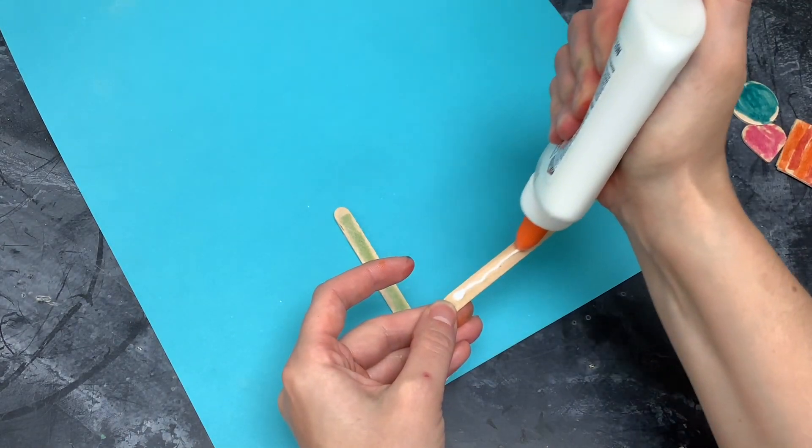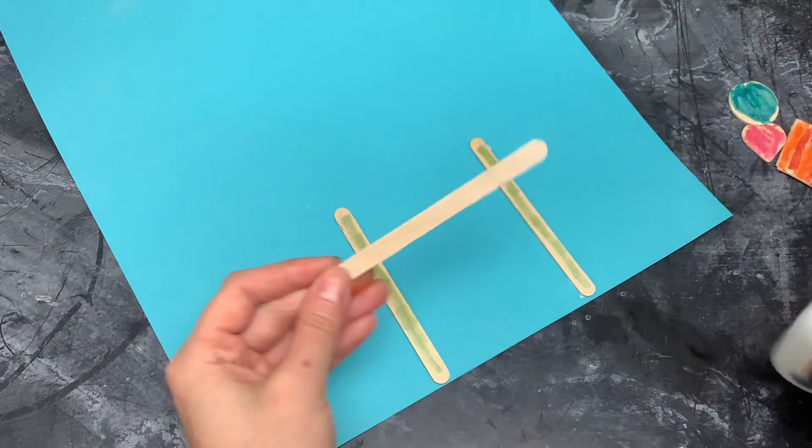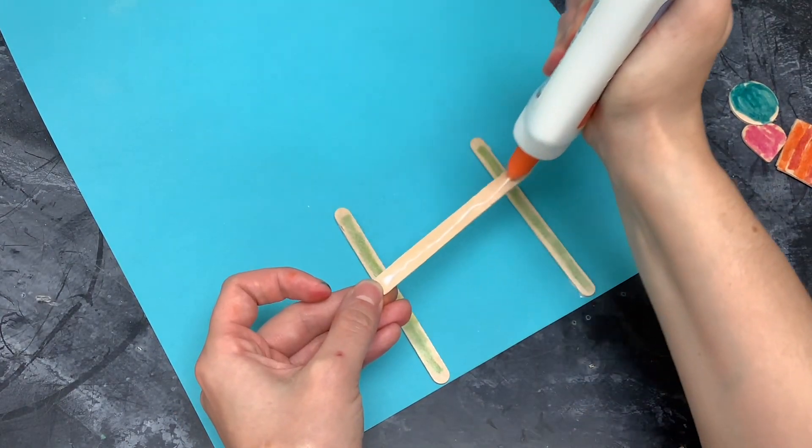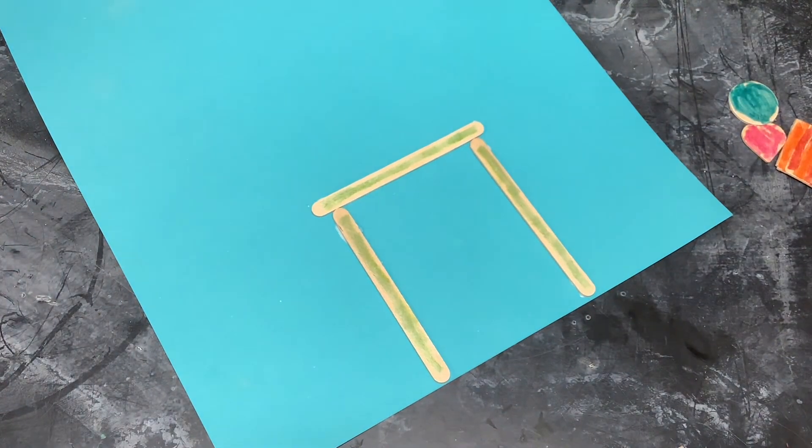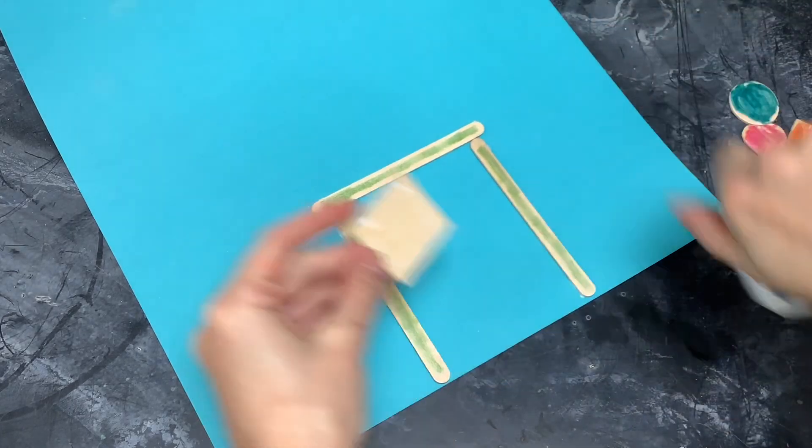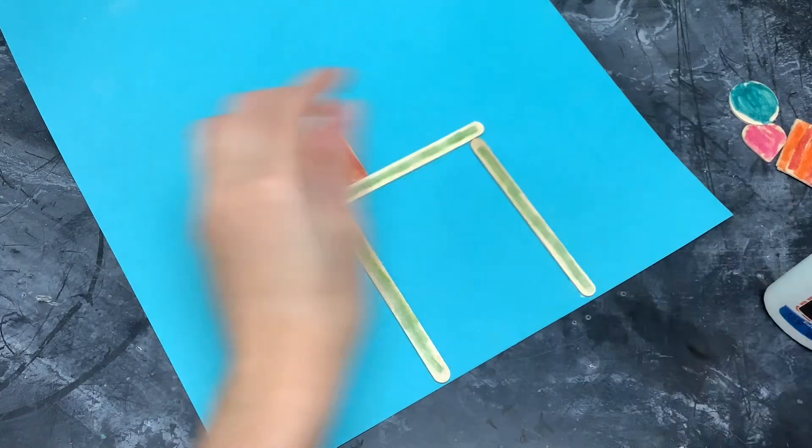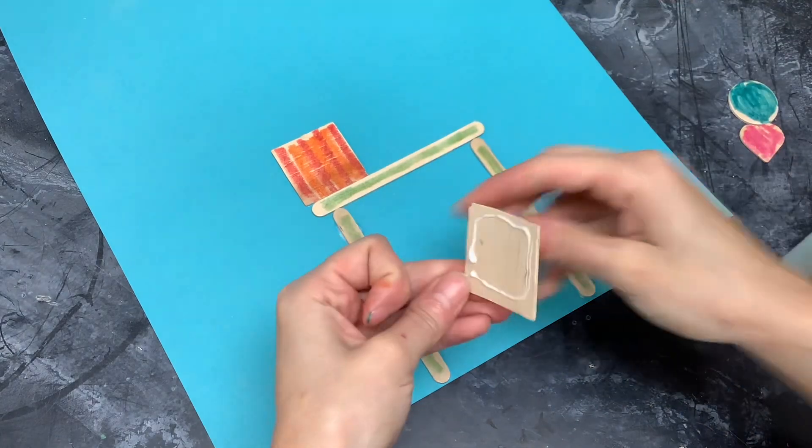And you can place the popsicle sticks wherever you would like on your big construction paper. So, I'm starting my building with a rectangle, since I know a lot of buildings are rectangular shaped. Then, I'm going to be adding some of these other shapes on top.